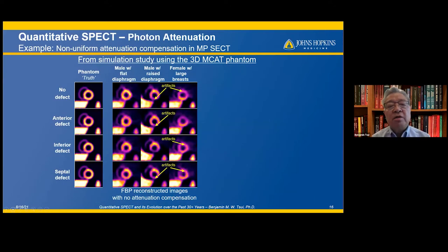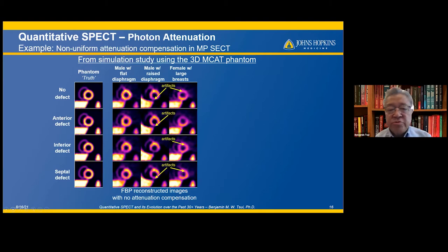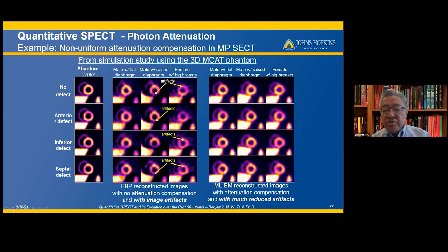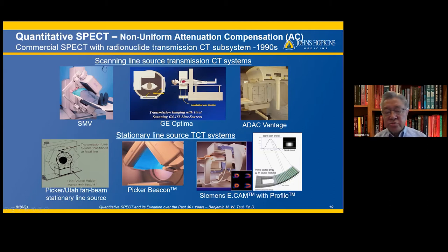This shows an example of the application of quantitative SPECT to photon attenuation compensation, using a simulation study with the 3D MCAT Phantom. The phantom is shown with different defects, and the filter back projected images with attenuation compensation show image artifacts, which is very important for clinical diagnosis. The ML-EM reconstructed image with attenuation compensation shows much reduced image artifacts compared to filter back projection.